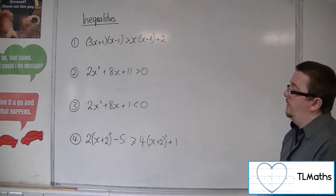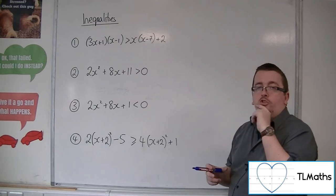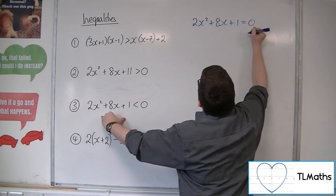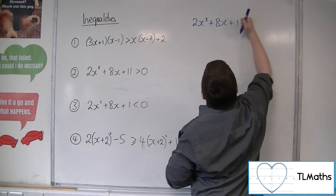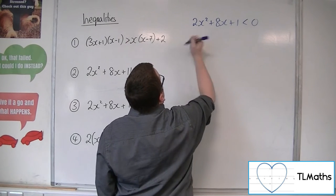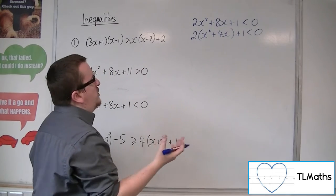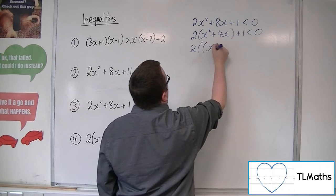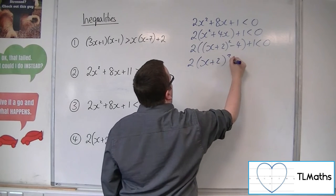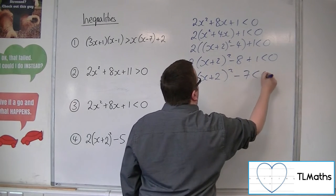For number 3, we've got 2x squared plus 8x plus 1, less than 0. I'm going to use completing the square. That gives 2 lots of x squared plus 4x plus 1, then factoring out the 2 from the first two terms. Completing the square on the inside: x plus 2 squared minus 4 plus 1. Multiplying through and simplifying gives us the completed square form.